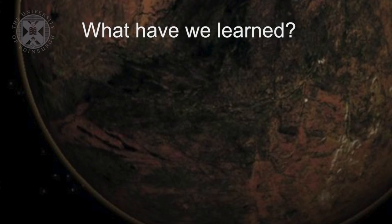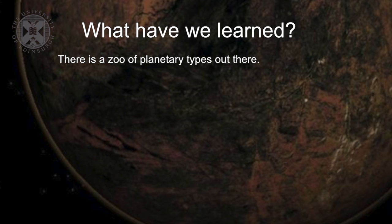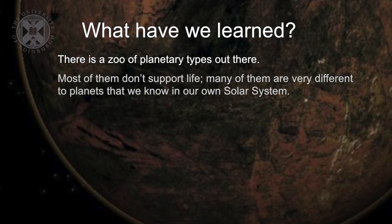So what have we learned in this lecture? Well, hopefully what we've learned is that there is a zoo of planetary types out there, a whole variety of different planets orbiting other stars. Most of them are not going to support life. They're very different to planets that we know in our own solar system.